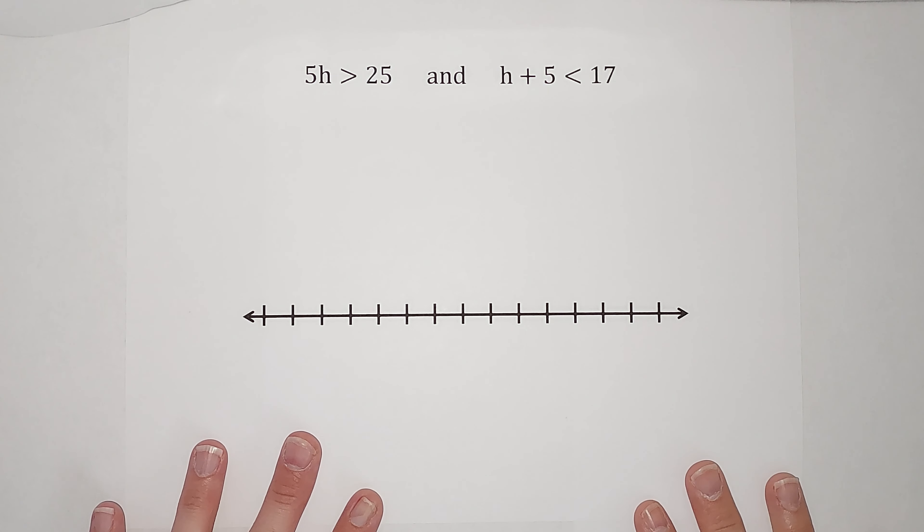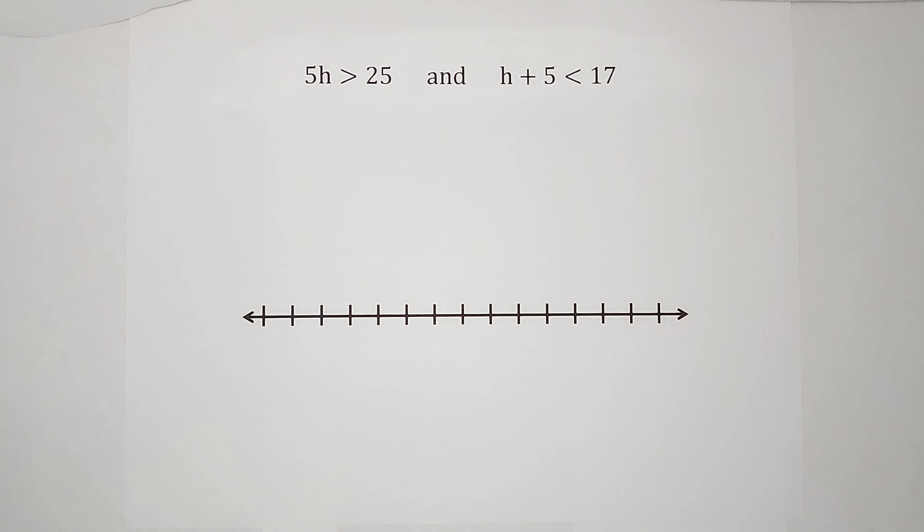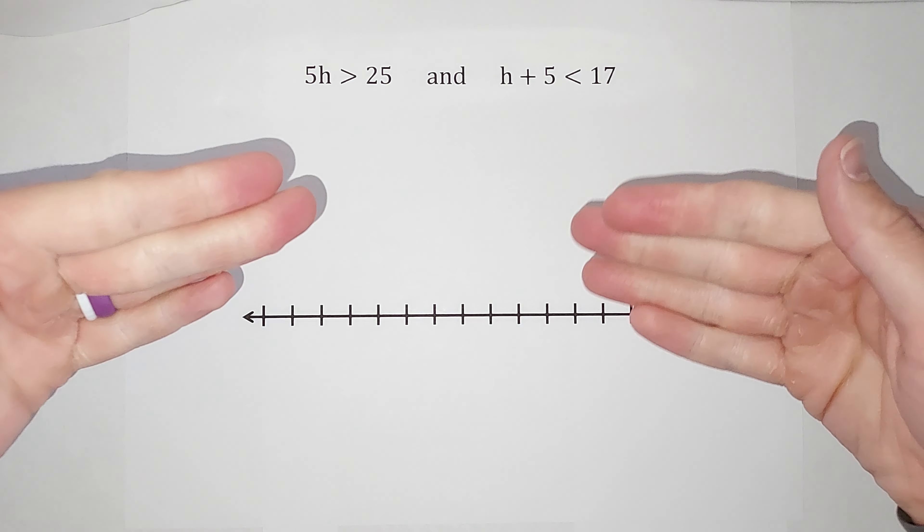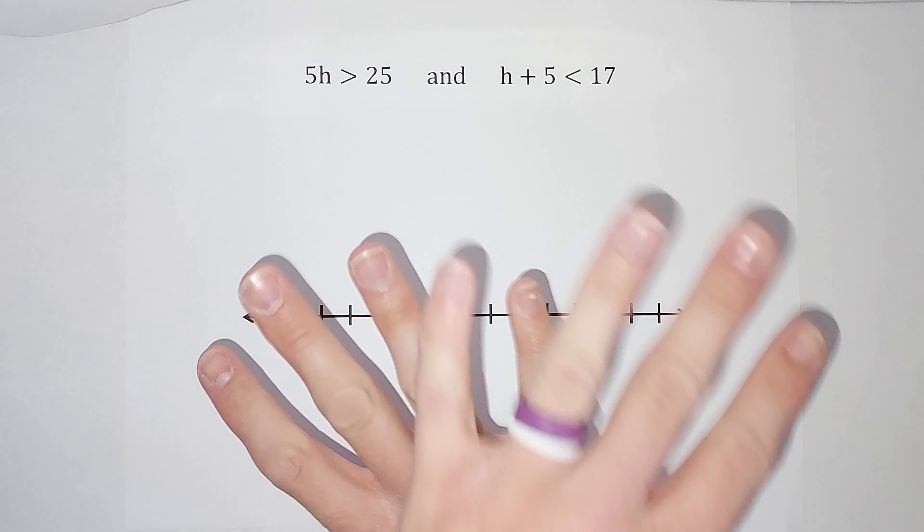Hey guys, we are looking at compound inequalities. So we have 5h is greater than 25 and h plus 5 is less than 17. Compound inequalities give us more than one inequality, and usually they're either going in opposite directions or they join together.